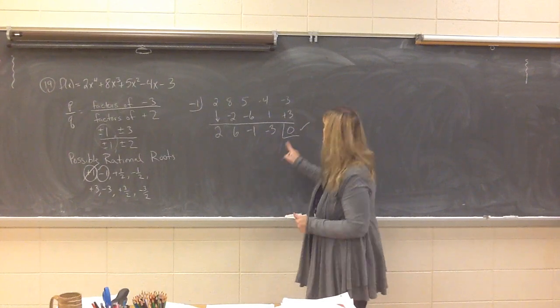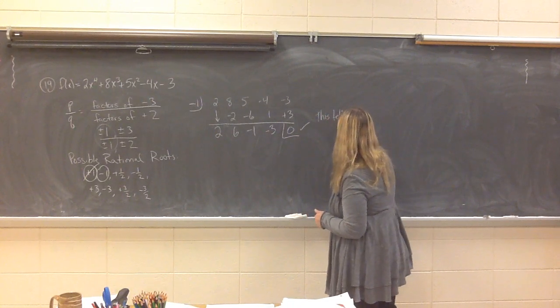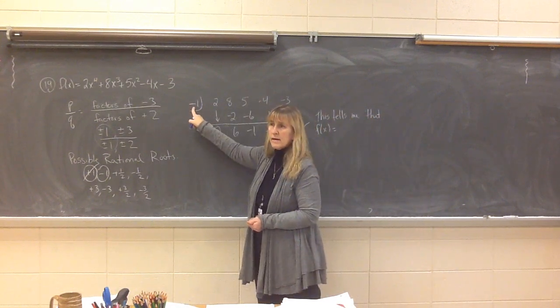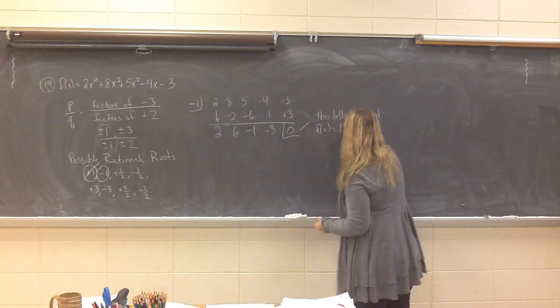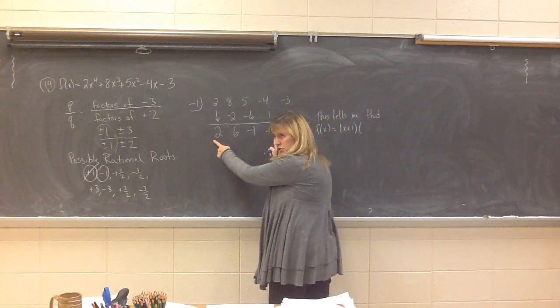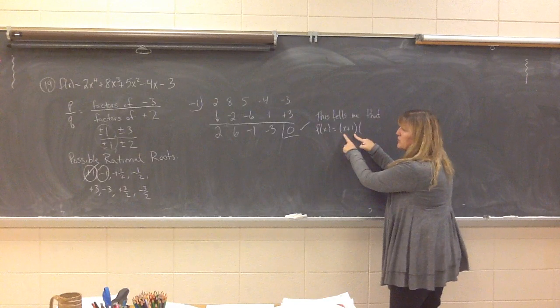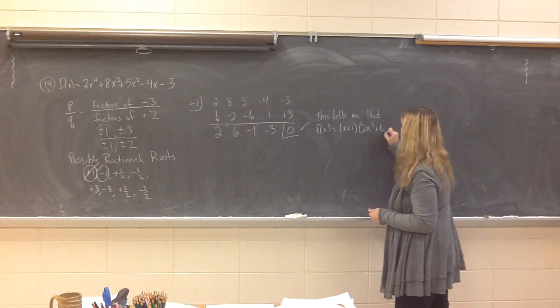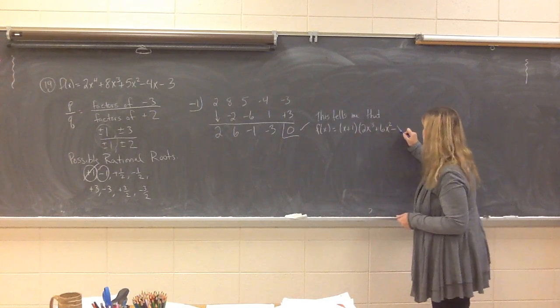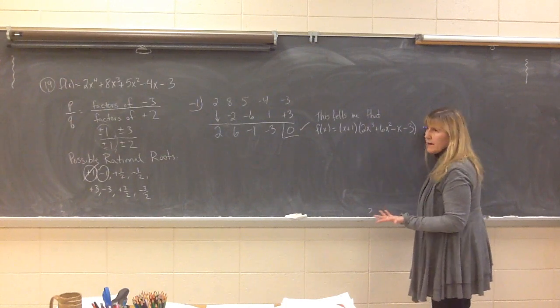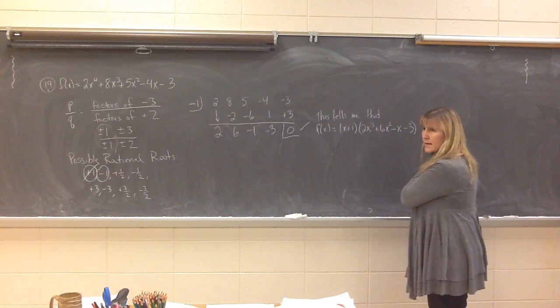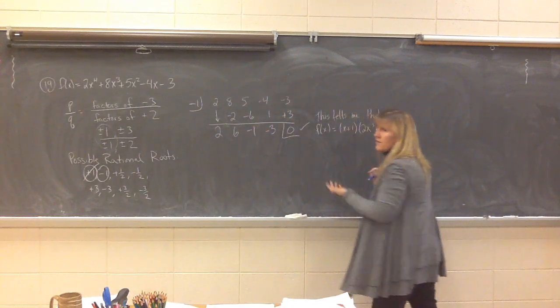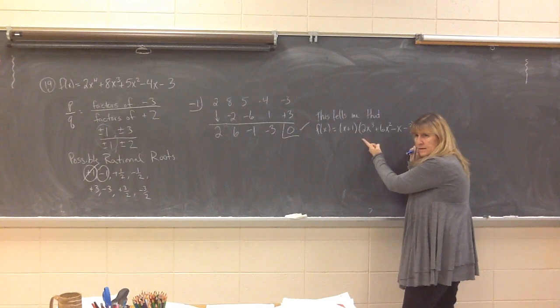And I've also found a factor. So at this point of the game right here, this tells me that f of x is going to have a factor of x plus 1. It also gives me this is my quotient, which tells me that this divisor that I was using gets multiplied by my quotient. 2x cubed gets knocked down by 1 degree. Okay? Plus 6x squared minus 1x minus 3 plus what? Plus my remainder, which is 0. So I don't have to write it. Okay? Now my goal is to factor this thing. I'm not going back to the original fourth degree polynomial function anymore. I want to factor this. Got me?